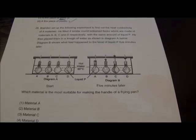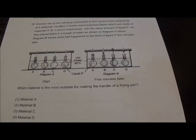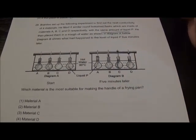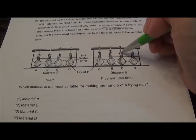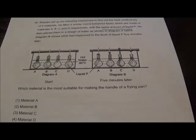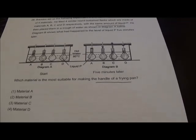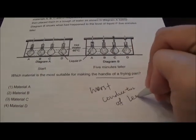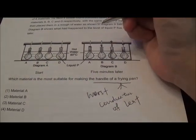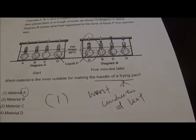Question 26: Brandon set up an experiment to find the heat conductivity of 4 materials using flasks made of materials A, B, C, D placed in a trough of water. The levels of liquid P differ — the higher the level of liquid P, the better conductor of heat it is. They want to make the handle of a frying pan, so they want the worst conductor of heat so you won't burn your hand. Material A increases the slowest — heat doesn't travel fast through it. Answer is 1.